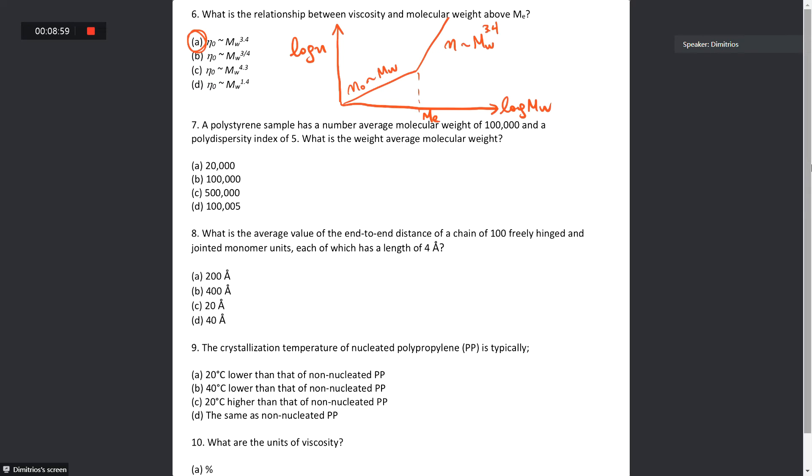That is why a small increase in the molecular weight above the molecular weight between entanglements can lead to a very pronounced increase in viscosity. Question number seven: A polystyrene sample has the number average molecular weight of 100,000 grams per mole and a polydispersity index of five. What is the weight average molecular weight? We have already talked that the polydispersity index, usually called PDI, is given by this simple ratio of the weight average molar mass over the number average molar mass. So from this equation, the weight average molar mass is 500,000 grams per mole. Correct answer is C.